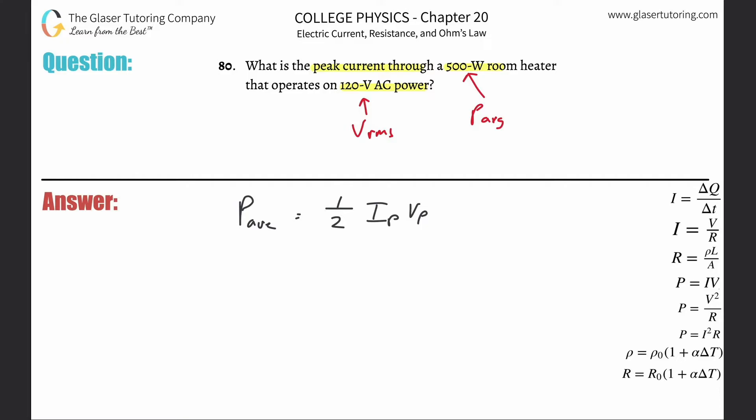Now what I realize is I have to find peak current, and I have in my formula here peak current already. So now what I need to do is solve for peak current. I can simply take this one half and bring it into the denominator, or I can bring just the two up into the numerator. I've got to bring the peak voltage down into the denominator.